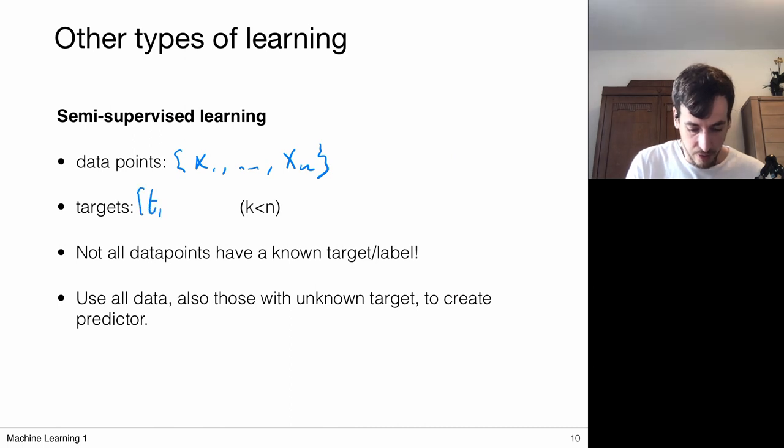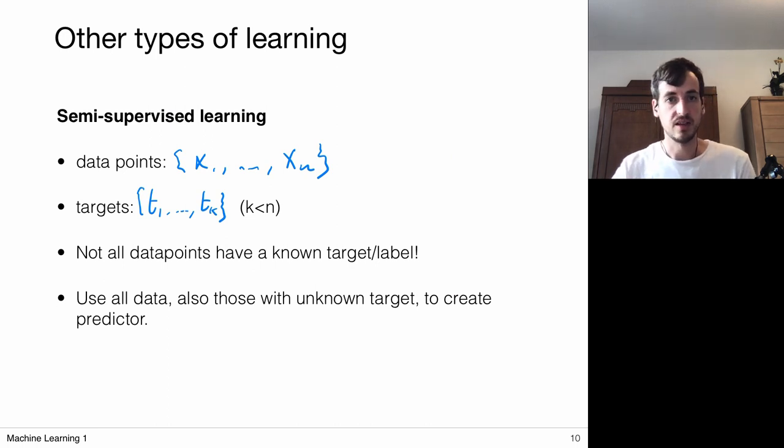But now I do not have available the full set of targets. I only have targets available for t_1 up to t_k, for example, where k is smaller than n. So what this means is, I have data, some of it is labeled, and some of it isn't.